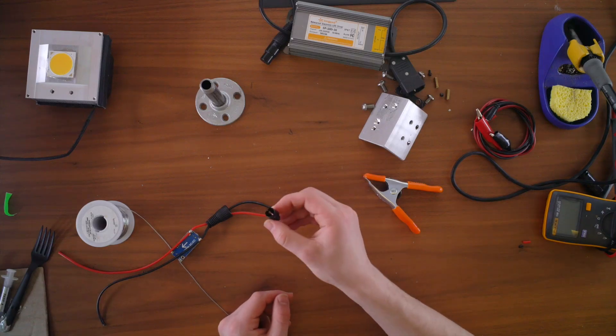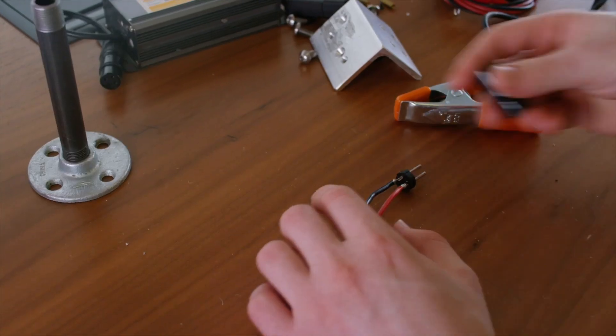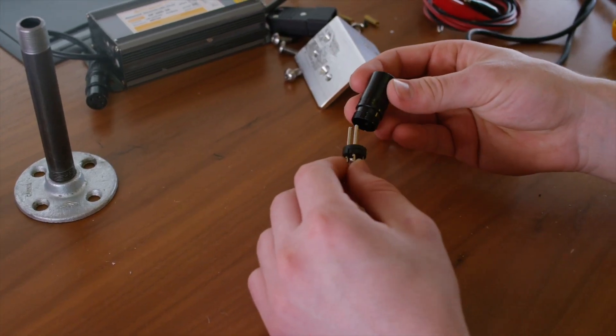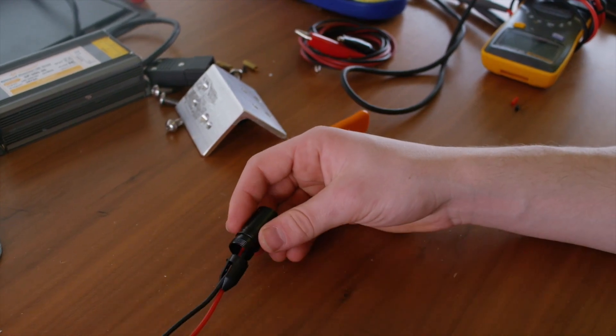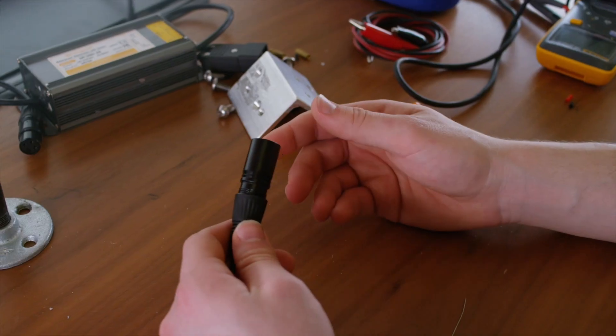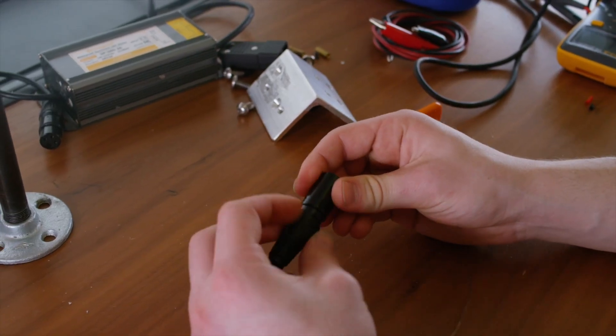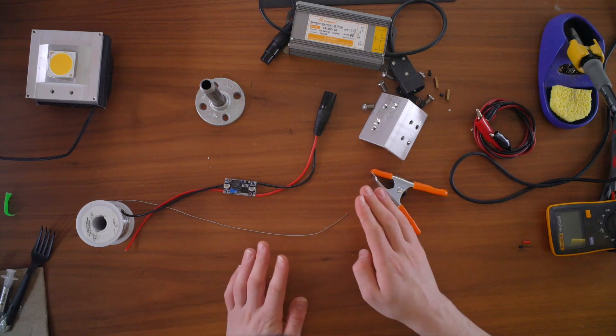When you're done soldering, you can go and take the plastic shielding and slide it over the wires. Now you can take the front of the XLR connector and slide it back on. Now you can slide the whole connector together and screw the casing back together.